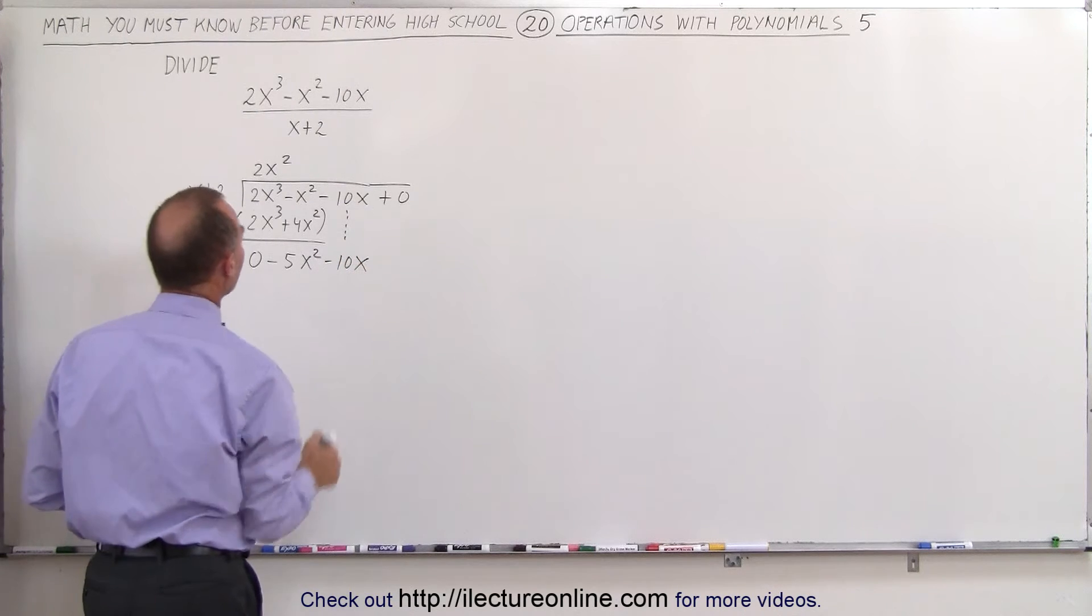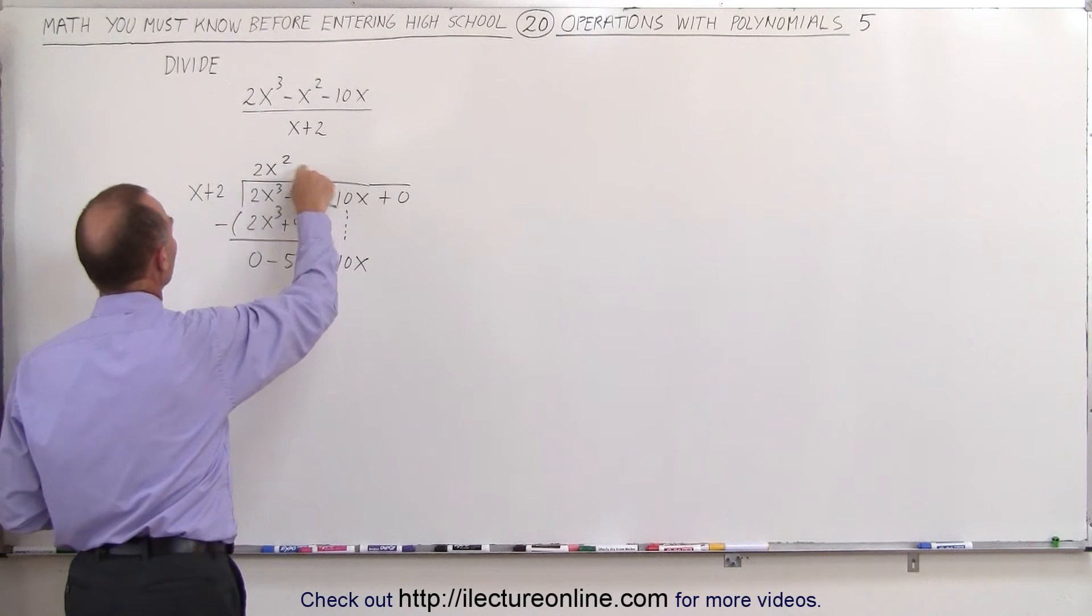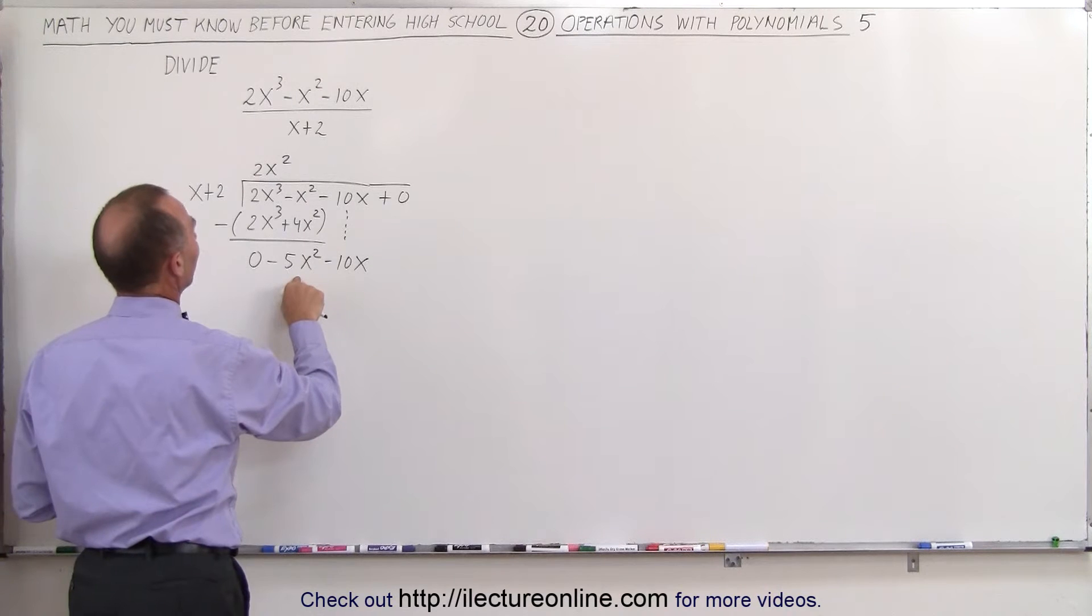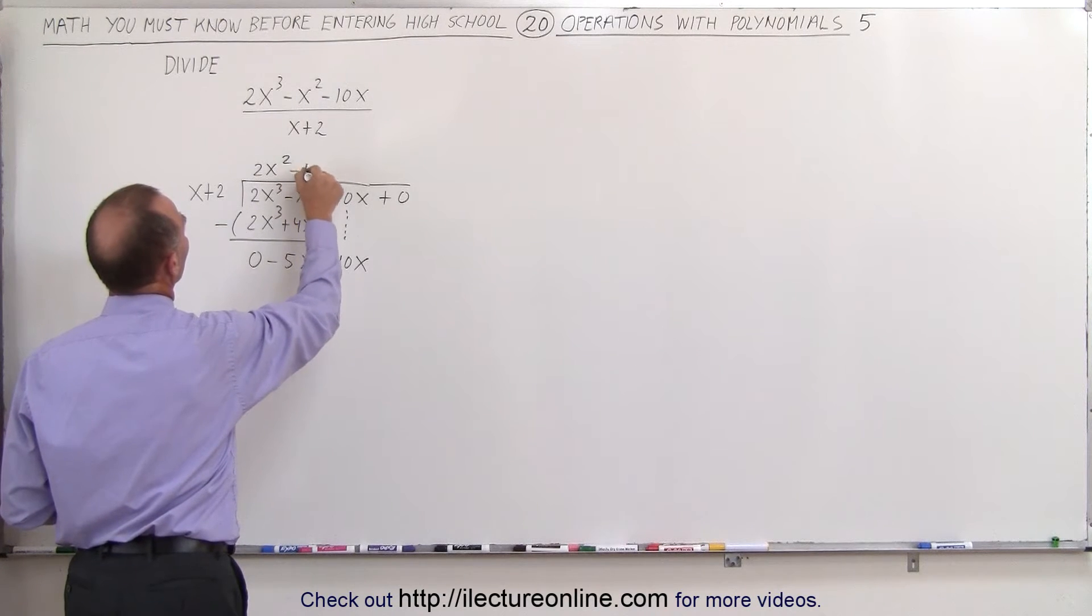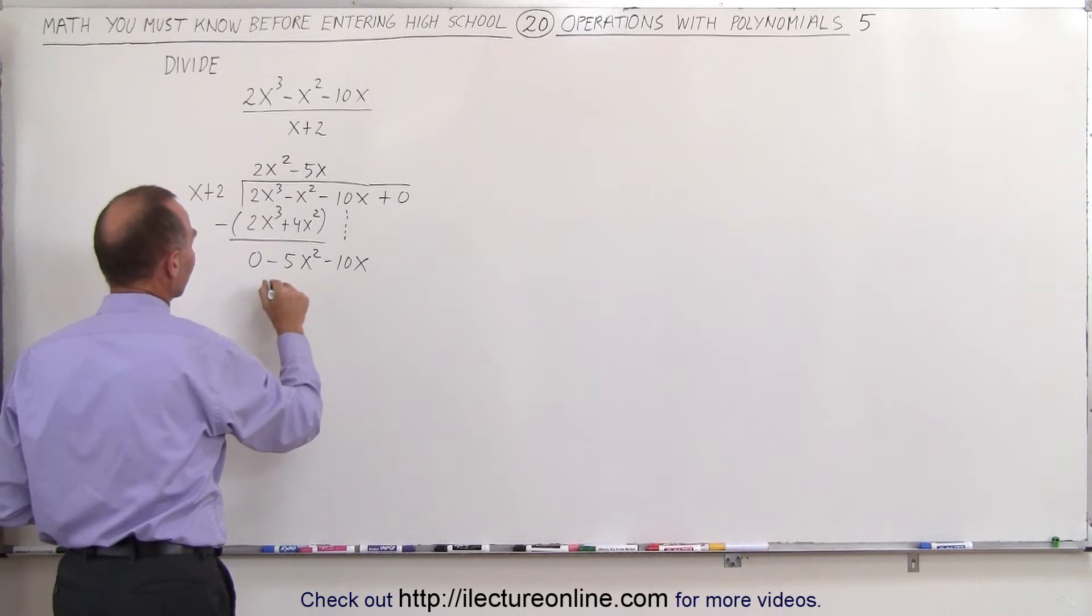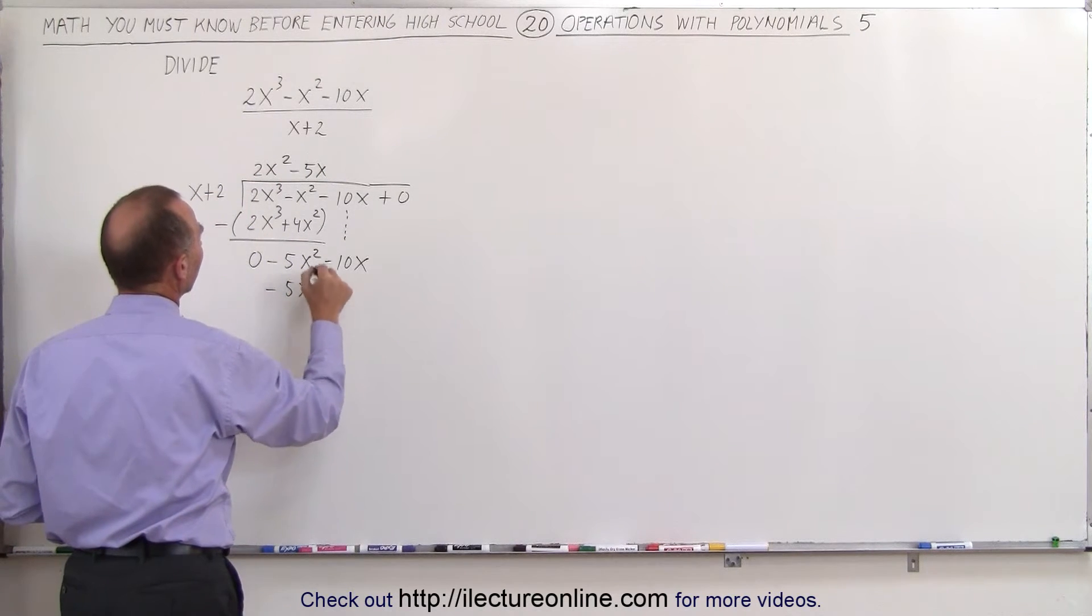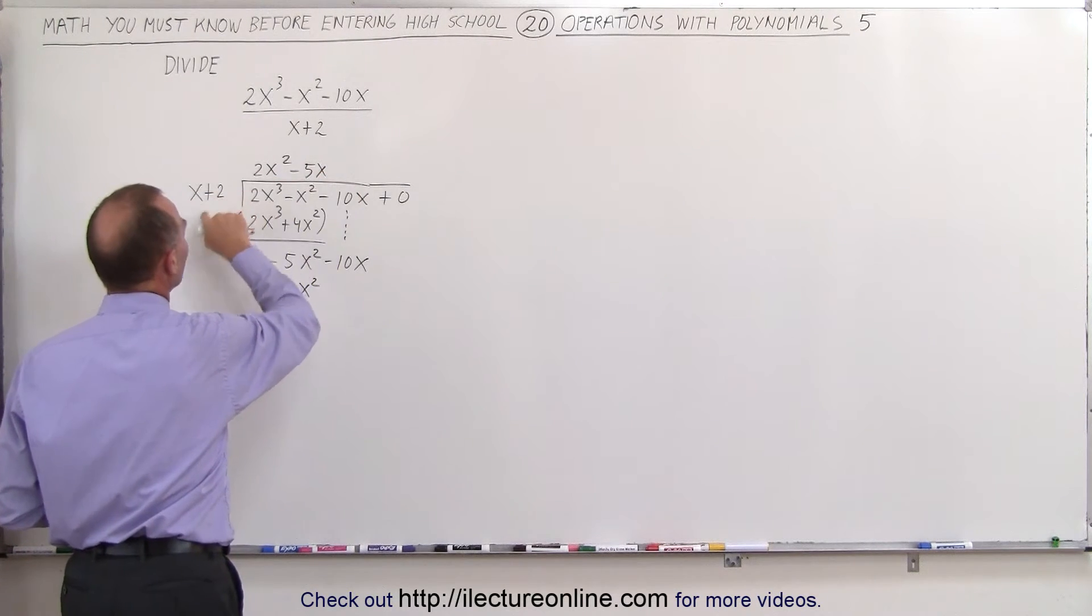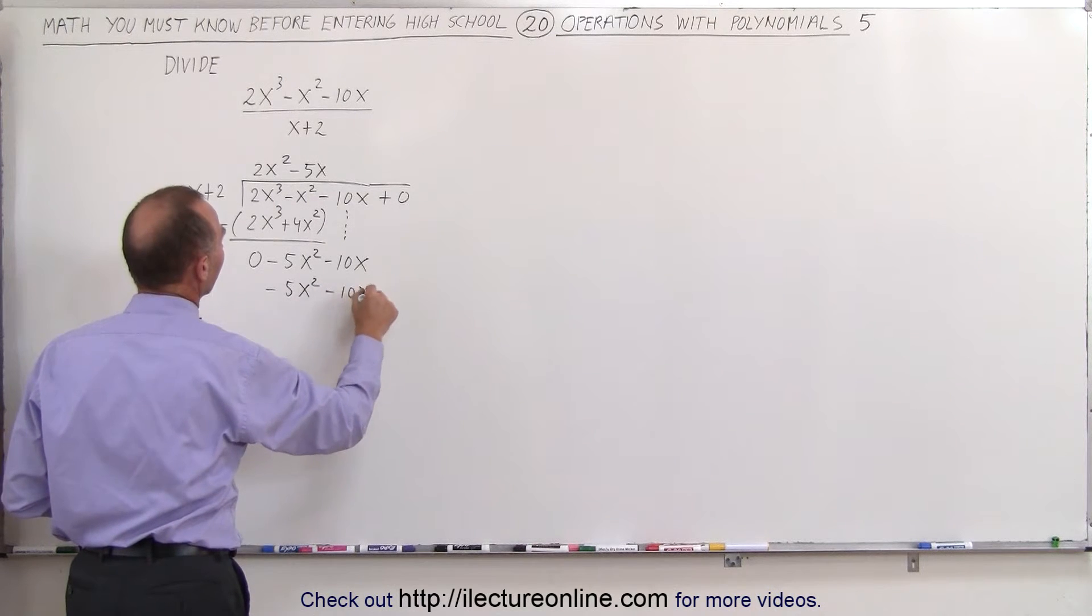And again, what number must we multiply times x to get -5x²? Well that would be -5x because -5x times x gives us -5x², and then -5x times 2 gives us -10x.